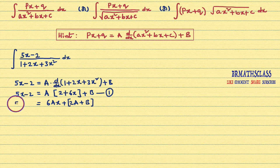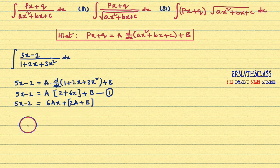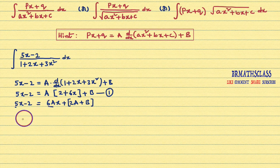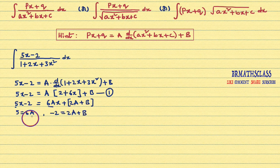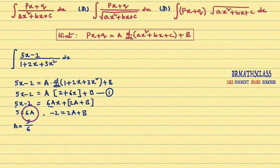On this side we have 5x minus 2. Our main intention is to find a and b by comparing coefficients. The x coefficient on the left is 5, and on the right it is 6a. Comparing: 5 equals 6a. Comparing constants: minus 2 equals 2a plus b. From the first equation, a equals 5 divided by 6.